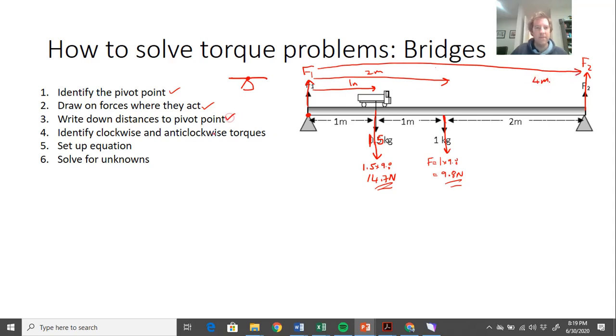Identify the clockwise and anti-clockwise torques. From this pivot point, if I imagine my whole beam rotating, imagine it could either rotate up, or it could rotate down. What are the forces trying to rotate it this way, and what are the forces trying to rotate it this way?